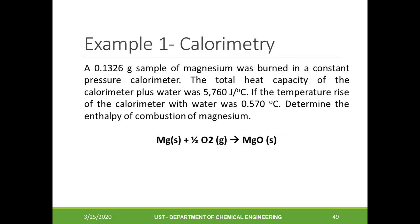Let's now try to consider the following problem. A 0.1326 gram sample of magnesium was burned in a constant pressure calorimeter. The total heat capacity of the calorimeter plus water was 5760 joules per degree Celsius. If the temperature rise of the calorimeter with water was 0.570 degrees Celsius, determine the enthalpy of combustion of magnesium. We are also given here the balanced chemical reaction for the combustion of magnesium.